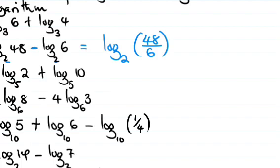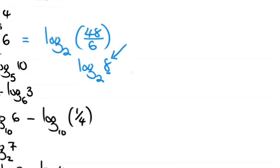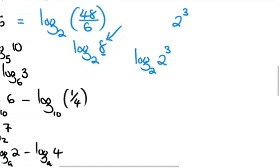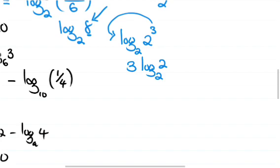48 divided by 6 is 8, so we have log base 2 of 8. Now we need to write 8 in terms of base 2. Since 8 equals 2 to the power of 3, we can get log base 2 of 2 to the power 3, which gives us 3.